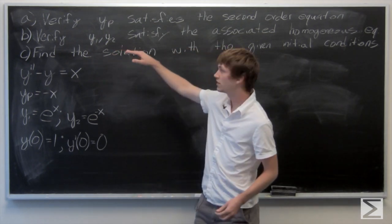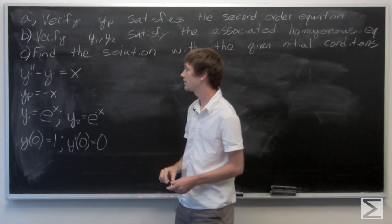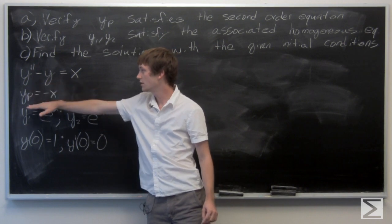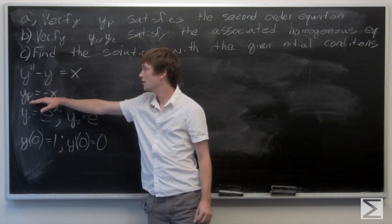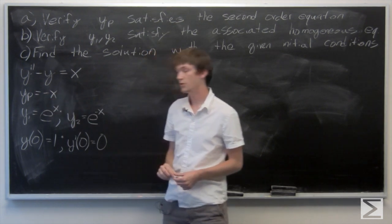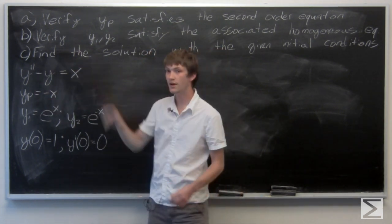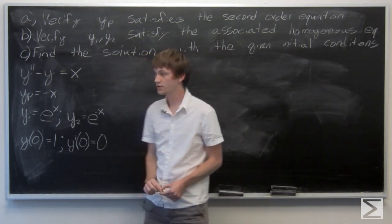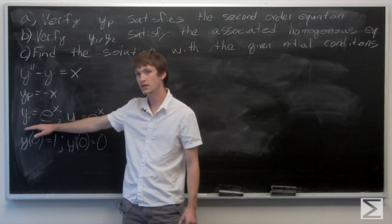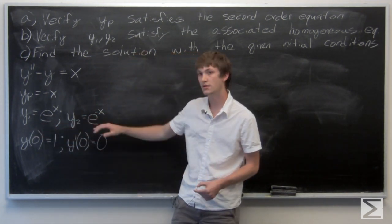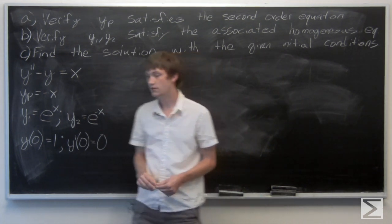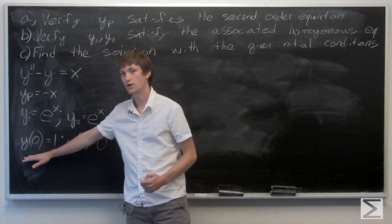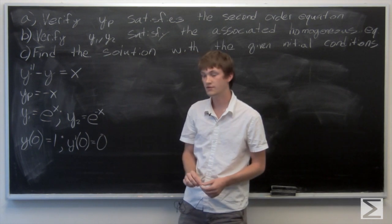In this problem we're asked to do three things. First, verify that the particular solution yp satisfies the second order differential equation, which is given here. The particular solution is yp equals negative x. Then we're asked to verify that y1 and y2 satisfy the associated homogeneous equation, where y1 equals e to the x and y2 equals e to the negative x. Finally, we're asked to find the solution with the given initial conditions: y of 0 equals 1 and y prime of 0 equals 0.